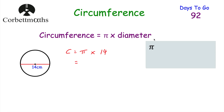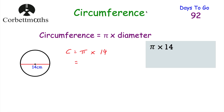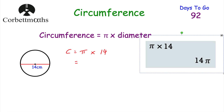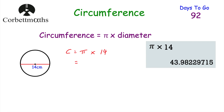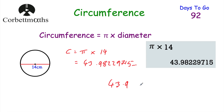On your calculator, you'd get the π button up by pressing shift and then π, then type in times 14 and press equals. Your calculator would show 14π. If the question asks you to give it to a certain number of decimal places, you'd convert that to a decimal, giving 43.98229715... centimeters. To two decimal places, the answer would be 43.98 centimeters. That's the circumference of the circle.